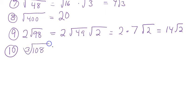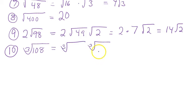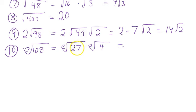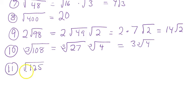For cube roots, the process is the same but using perfect cubes instead of perfect squares. It helps to list: 2³ = 8, 3³ = 27, 4³ = 64, 5³ = 125. For the cube root of 108, the biggest perfect cube that divides it is 27. So 27 times 4 is 108 — both under cube roots — and the cube root of 27 is 3, leaving 3 times the cube root of 4.